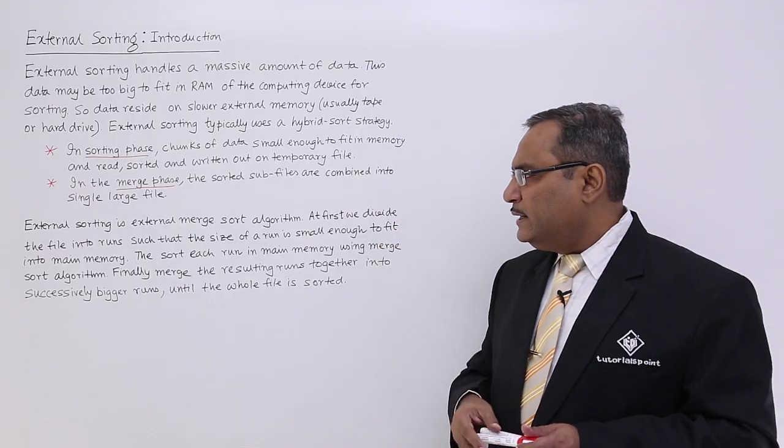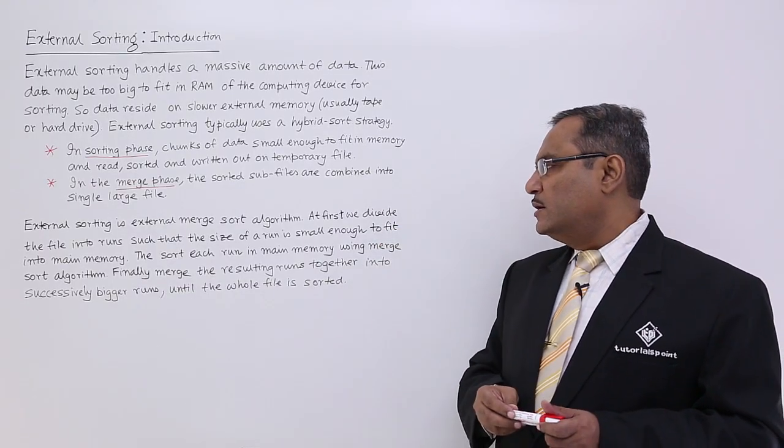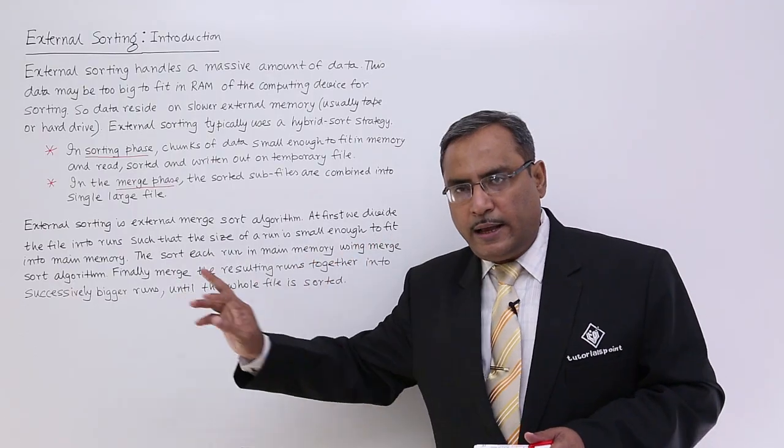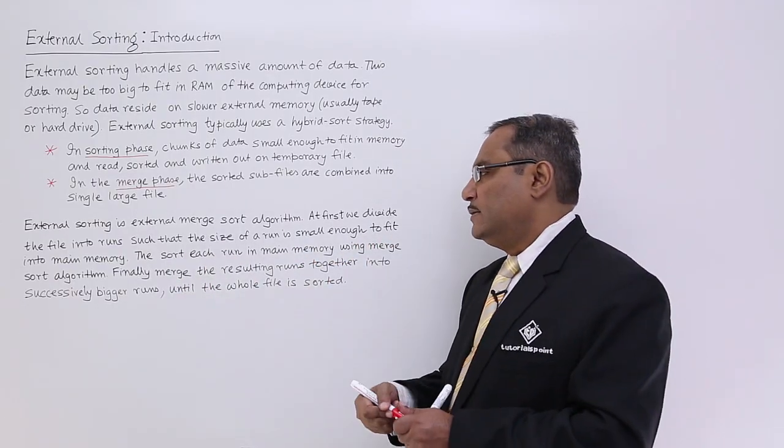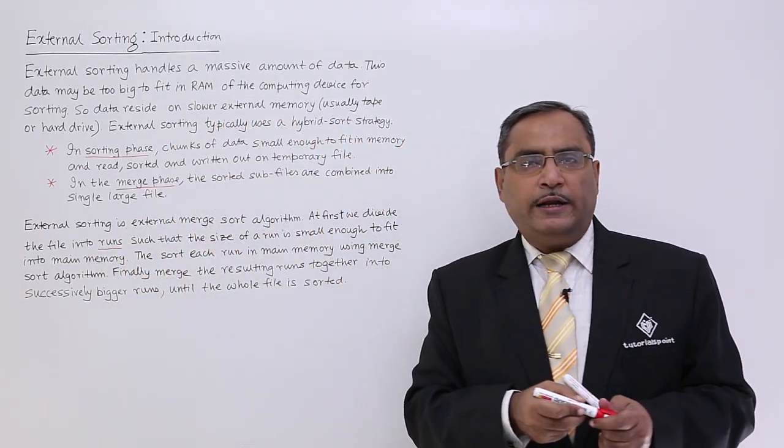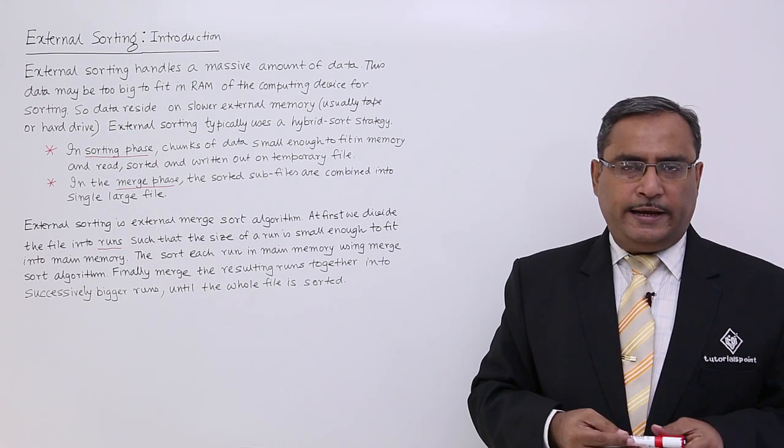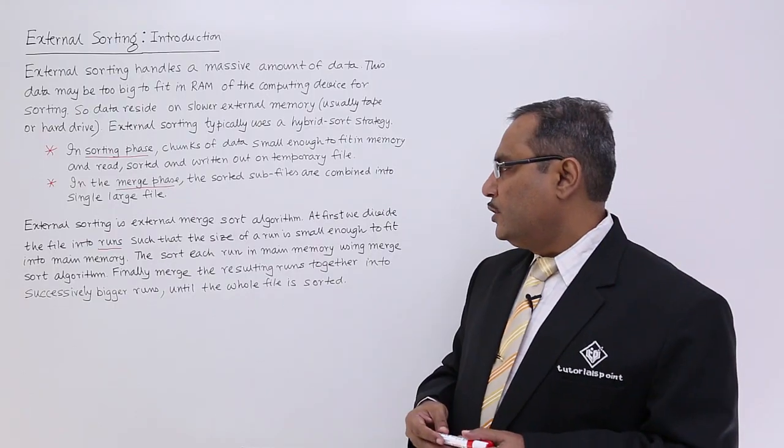At first we divide the file into runs such that the size of a run is small enough to fit into the main memory. This run is a technical term. The file will be divided into runs so that the run size will be selected in such way that it can be fit onto the computer's primary memory.